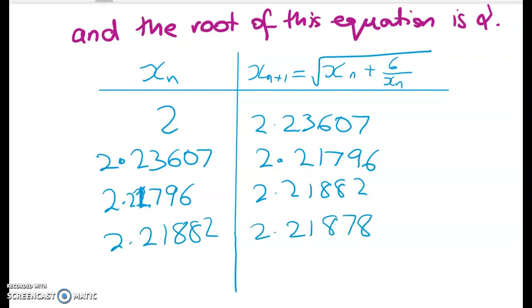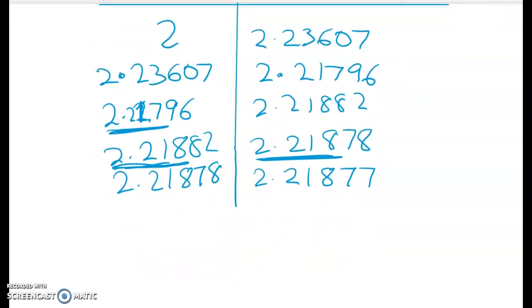We've got to go until we've got three decimal places. So we're just about there. That's two point two one nine. That's two point two one nine. That's two point two one eight. So we just want to be careful. Maybe do one more. You can see that we've gone far enough now. So it converges to the value two point two one nine to three DP.